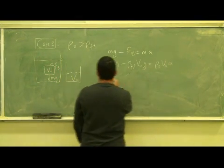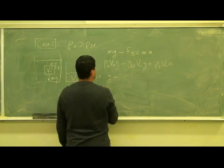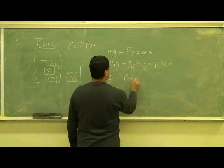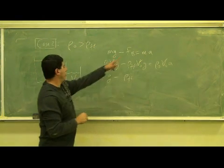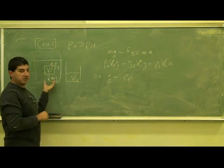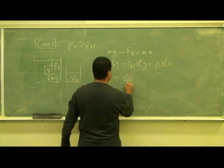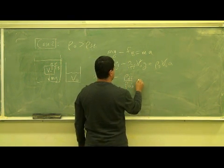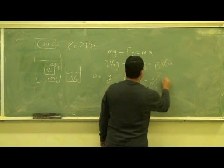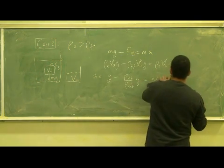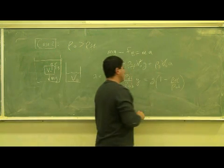The acceleration of the object is going to be equal to rho zero V zero cancels rho zero V zero, so it's just going to be G minus rho fluid V zero V zero cancels. So all the V zero is actually cancelled, because the buoyant force is equal to the total volume since all of it is sunk in. So there is no B prime here. So G minus density of fluid over density of object times G. Or you can factor out the G and just leave it as G times one minus density of fluid over density of object.